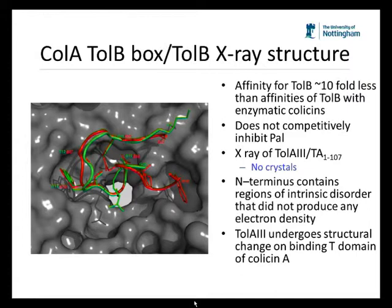Unfortunately, when we made the two proteins and formed the complex, and then put the complex through crystallization trials, we were not able to produce any crystals under any crystallization conditions. We know from our work with enzymatic colicins that the N-terminus of these colicins contains regions of intrinsic disorder that do not produce any electron density. Combined with the fact that TolA3 undergoes structural unfolding on binding the T domain of colicin A, we wondered whether this intrinsic disorder of the N-terminus of colicin A was the reason for the inability to form any crystals of the complex.